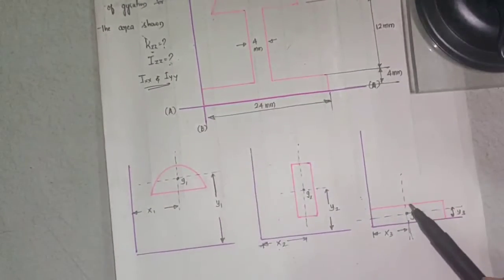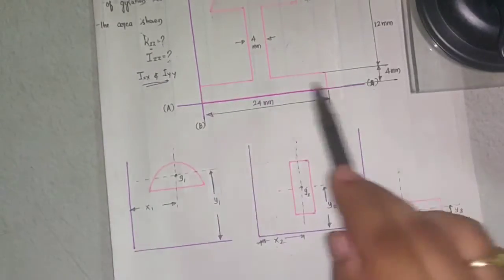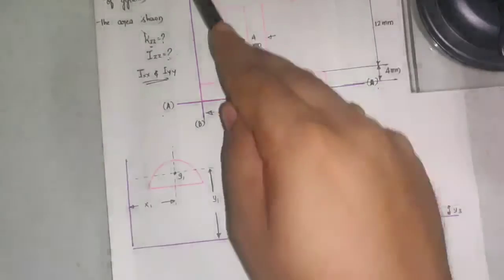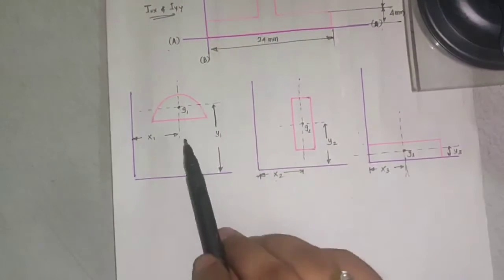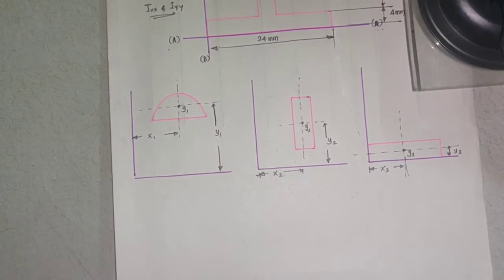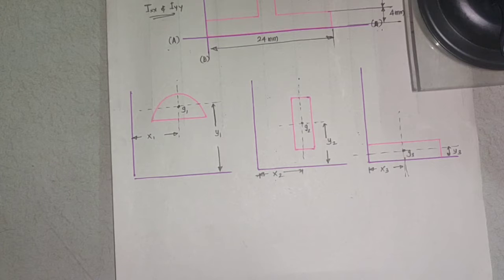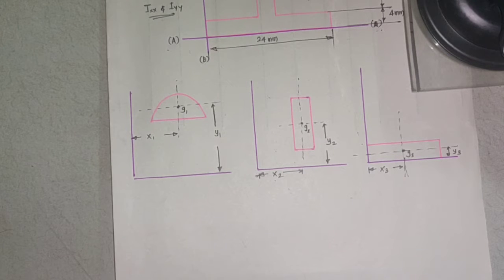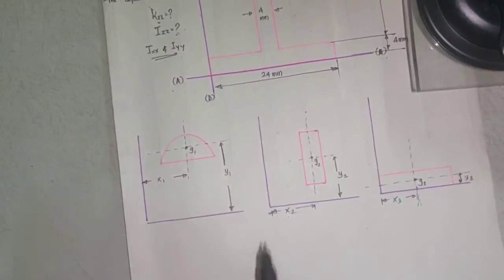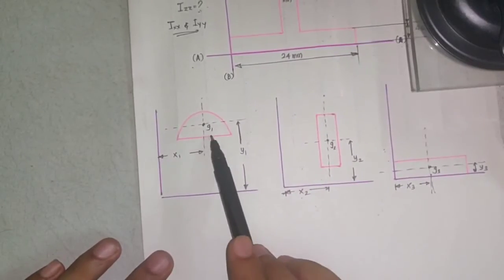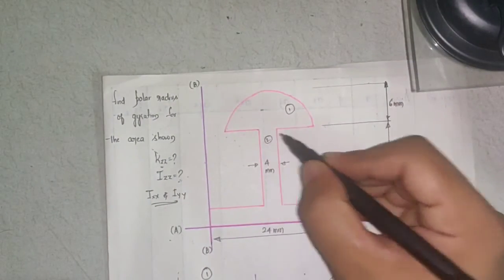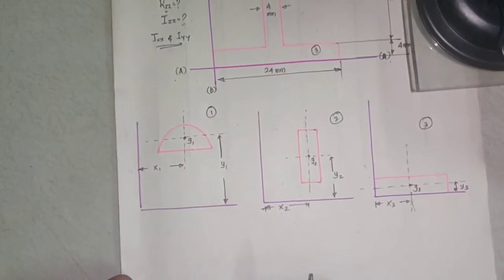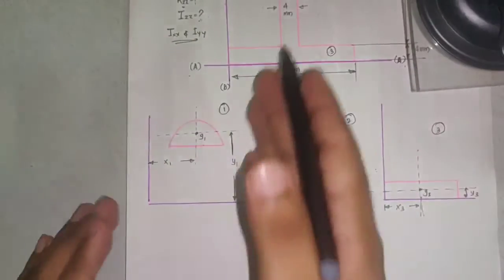Starting with step one: we fix the reference axis. Parallel to the x-axis I'll call this AA, and parallel to the y-axis I'll call this BB. Step two: we divide the figure into standard geometrical shapes. This division is required to locate the centroid of the object, because we are going to find the moment of inertia about the centroidal axis. I'll mark the three elements: first element, second element, and third element.